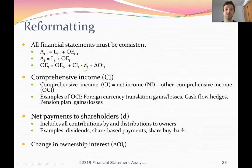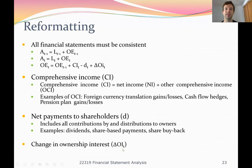In the formula, D is actually net payments to shareholders — all money the company is giving to or taking from shareholders. Paying a dividend is a cash outflow, but if the company raises money by selling more shares, that would be a negative D. We also have to account for any small changes in outside ownership interest to make sure our starting and ending owner's equity balances make sense.